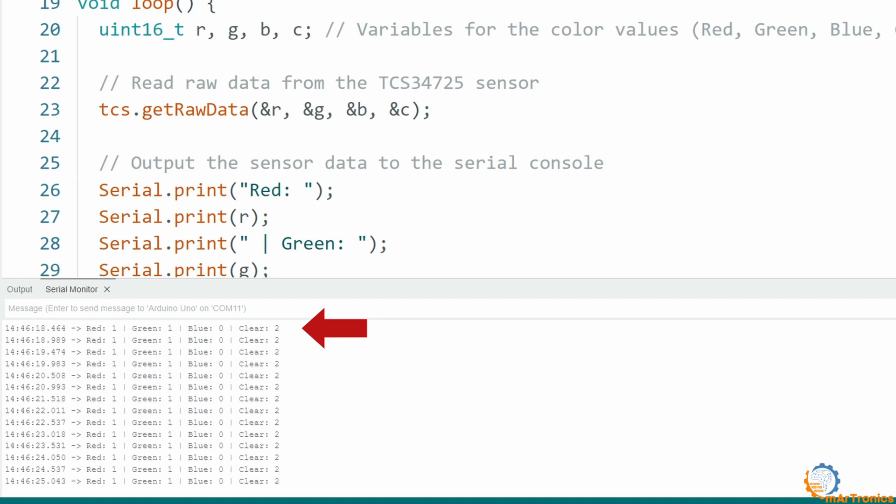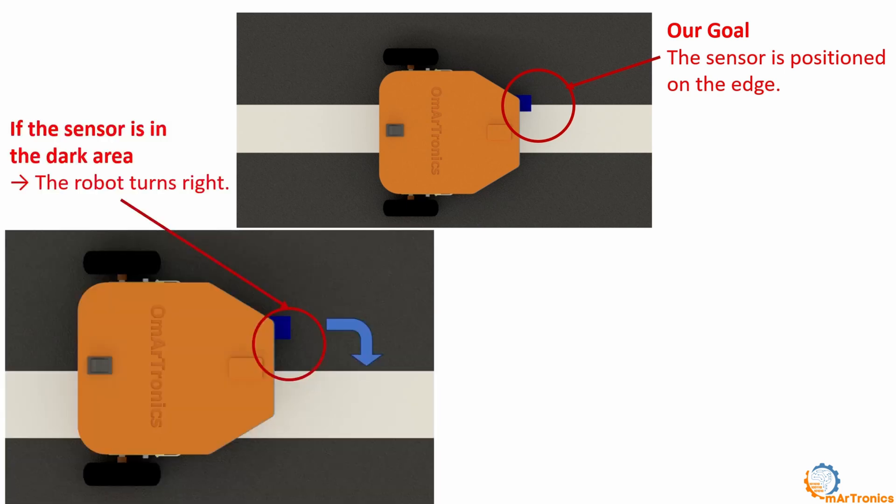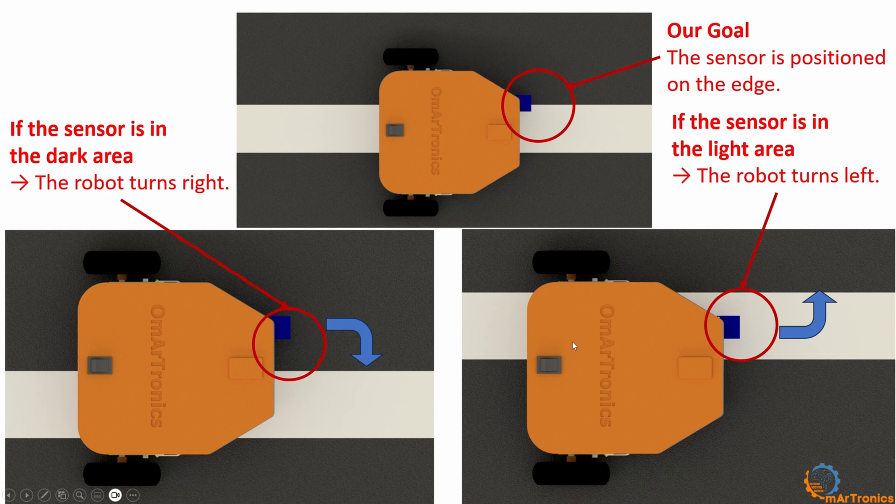After I explained how the sensor works, I will now explain how to use it to track this line. The goal is for the robot to stay on the line and the sensor to stay on the left edge. For this line, this means that if the sensor is in the dark place, the robot must turn right until it returns to the edge. Then the same thing if the sensor is completely located on the white place, the robot must rotate to the left for the sensor to return to the edge again.